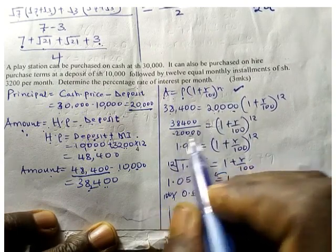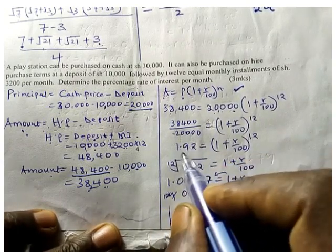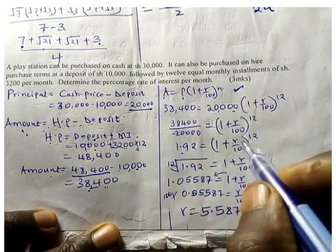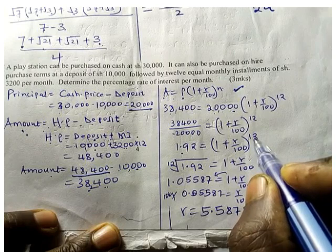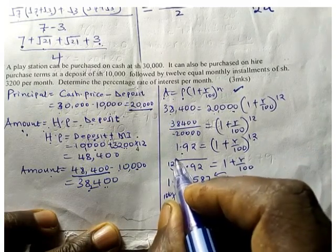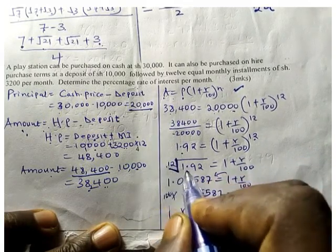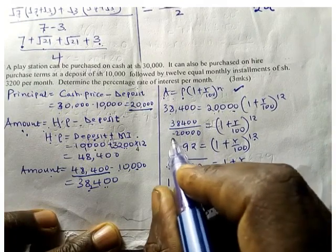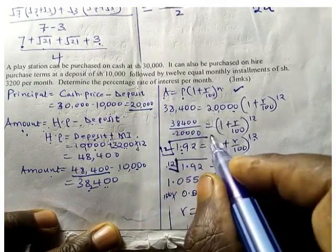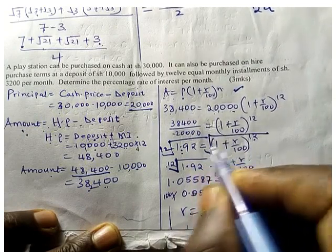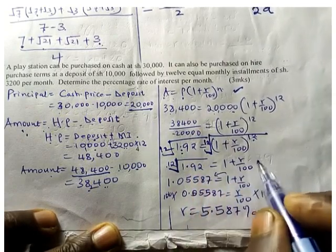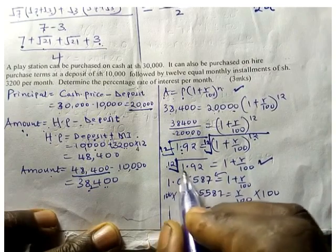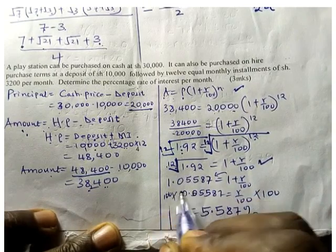Now to remove this exponent of 12, we calculate the 12th root of this value—not divide by 12. Root both sides, take the 12th root of both sides to isolate the term, and then we find the 12th root of this number.